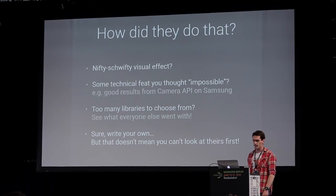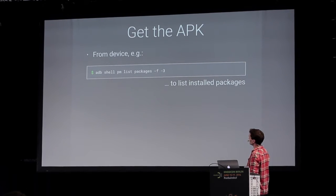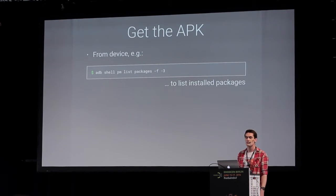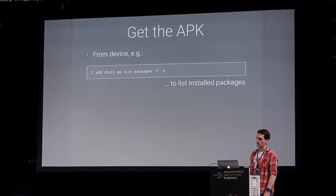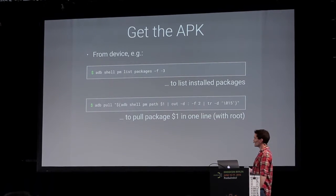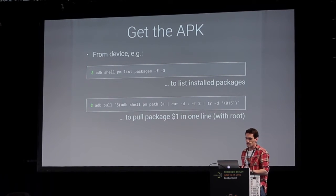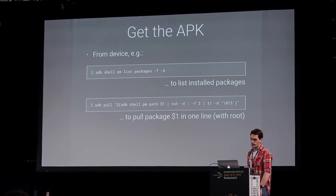Hopefully I'll convince you. The first thing you want to do is get the APK off the device - it's pretty straightforward. This one-liner will list all the packages that have been installed. The '-3' stands for third party, meaning installed on the device, and '-f' tells you the file paths. You can then easily pull one back with this little one-liner. It's a bit messy - this is largely because of ADB line endings - but given a package name, this will pull the APK off your device. It's a nice easy way to pull it onto your computer and start having a look.